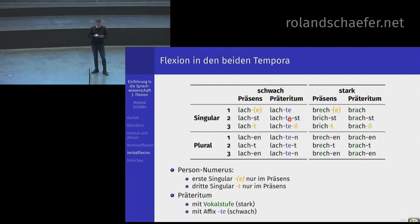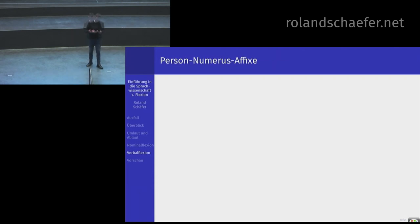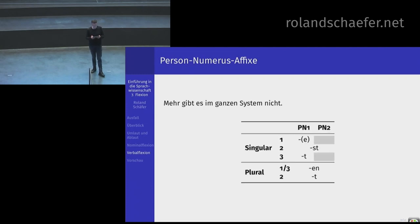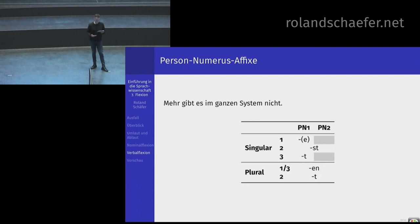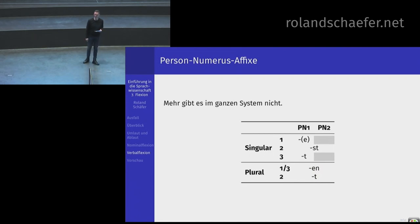Ansonsten sind die Person- und Numerusendungen im Präsenz und Präteritum identisch. Im Präteritum haben starke Verben eine Extrastufe – keine Umlautung, sondern eine Vokalstufe; bei schwachen Verben kommt ein T hinten dran. Die Person-Numerus-Affixe – PN1 – haben im Präsenz ein Schwa in der ersten Person und ein T in der dritten, ST in der zweiten Singular; T entfällt im Präteritum. Im Plural gibt es nur diese beiden Endungen. Das war's.